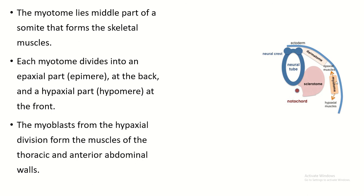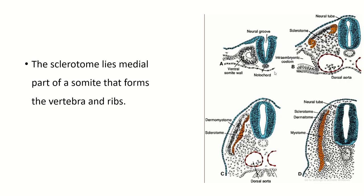The myotome lies in the middle part of the somite and forms skeletal muscle. Each myotome is divided into an epiaxial part and a hypoaxial part. The hypoaxial part gives rise to the muscles of the thoracic and anterioabdominal wall.